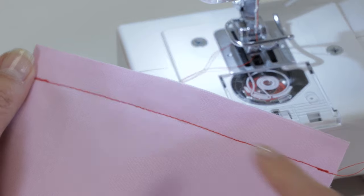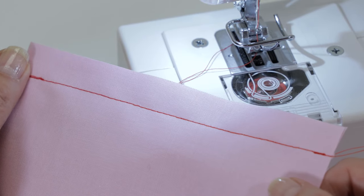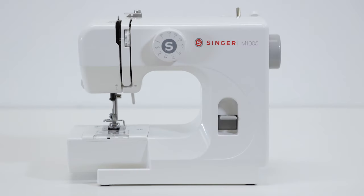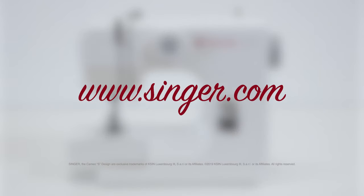Here we have reverse stitches at the beginning and end of our seam so that the stitches don't unravel as we continue working on our project. For more information, a full instruction manual is available on the Singer website to view or download any time.